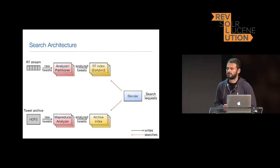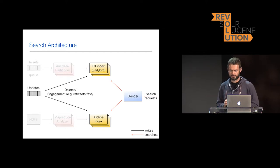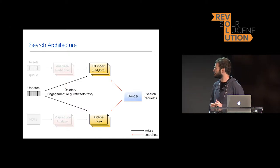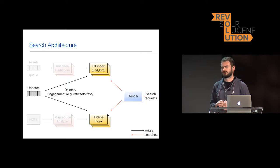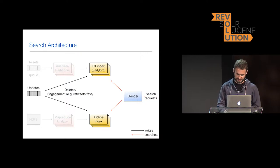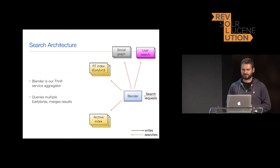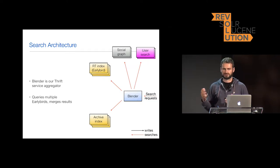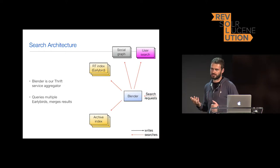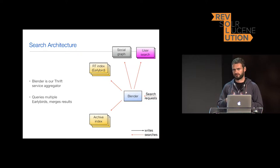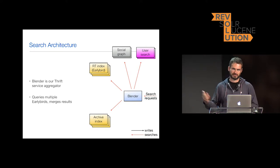Another component is what we call our Blender — it receives search requests from the API or from our apps via Thrift, which is an Apache serialization format. It fans out these requests to different search indexes. We also have a stream of updates: if you favorite or retweet a tweet, or delete a tweet, those updates arrive through a different pipeline and we apply them in place in both clusters — whether the archive or in-memory index.